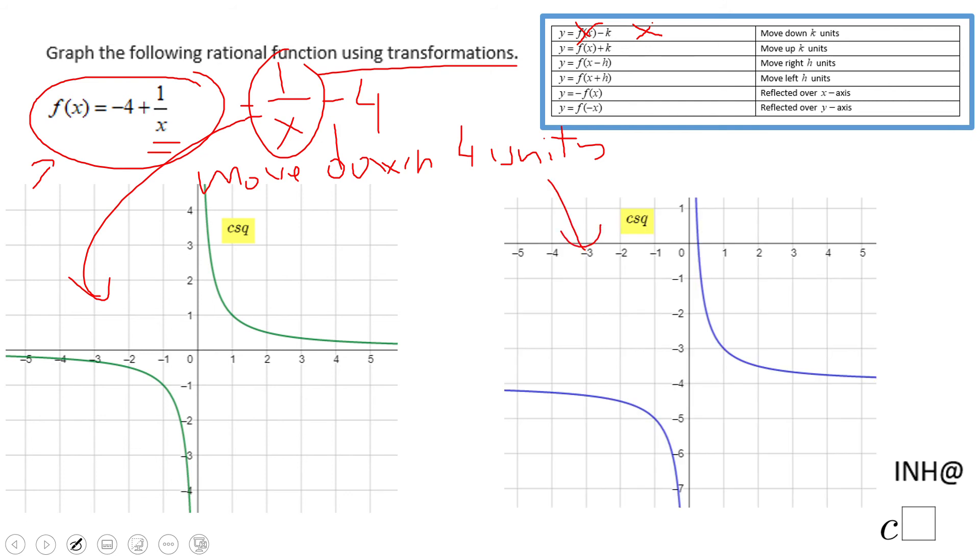You might want to notice here the horizontal asymptote moved down 4 units. Another way to see the graph of a rational function. If you enjoyed this, don't forget to click